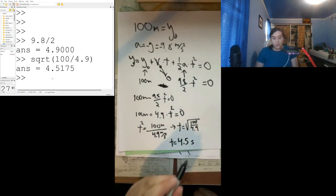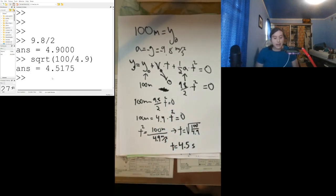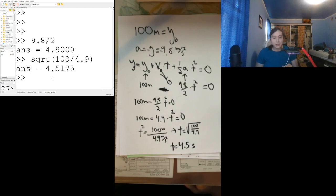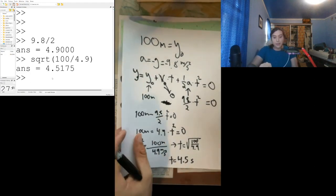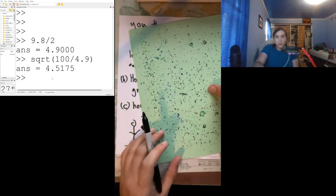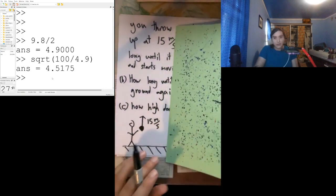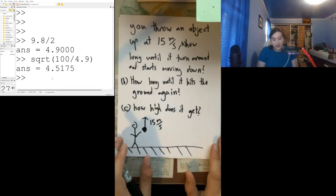We'll discuss in a later lecture why this is not a very realistic scenario. Because if something is dropping 100 meters, it's going to reach speeds where air resistance will matter. But if we neglect air resistance, it takes 4.5 seconds to drop 100 meters. That's quite a long time — 1, 2, 3, 4 seconds — from a 300-foot drop. Fortunately, there aren't too many 100-meter towers, and air resistance is not negligible in reality.